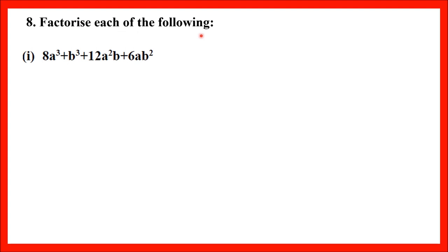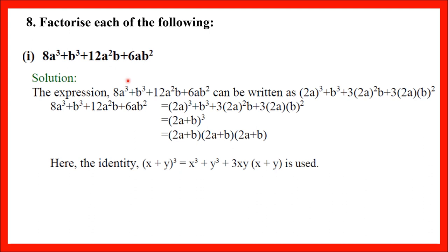Question number 8: Factorize each of the following. Some expressions are given which we need to factorize. The form given here is expanded form; the left side of the identity is the factorized form. So we need to use the identity and equate to the left side. Since all terms are positive here, identity number 6 — (x + y)³ — will be used.